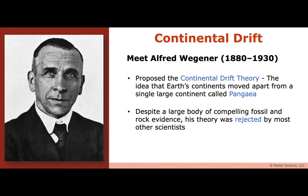So meet Alfred Wegener. This dude proposed the continental drift theory, which is the idea that Earth's continents moved away from this big single continent called Pangaea. He didn't know how they moved, but he knew they did. He had a lot of fossil evidence and rock evidence, but most scientists said nope — because scientists do not like being proven wrong, and they don't like change. He was going to prove people wrong and make change, and everybody rejected it. But then they came back about 50 years later and said, oh man, that dude was right.